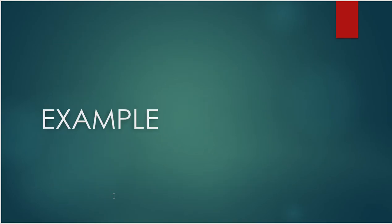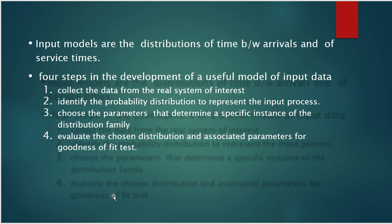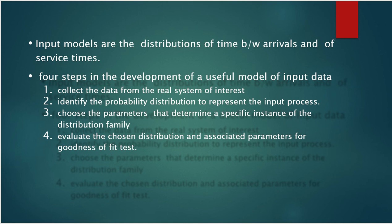The four important steps in selecting the input model are: collect the data from the real system, identify the probability distribution, go for selection of the parameter, then evaluate the chosen distribution and associated parameter for the goodness of fit test. In the next session, I will be solving problems related to chi-square goodness of fit test and KS goodness of fit test, and also one problem related to correlation and covariance. Thank you.